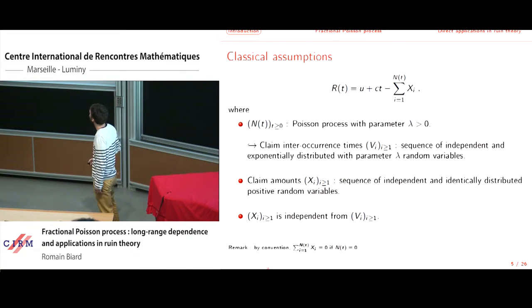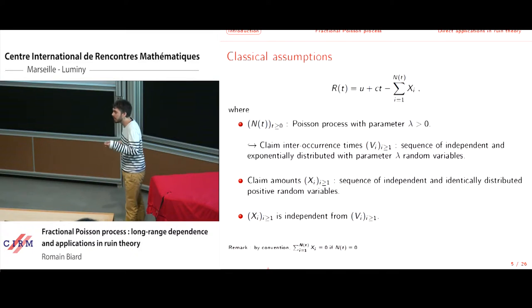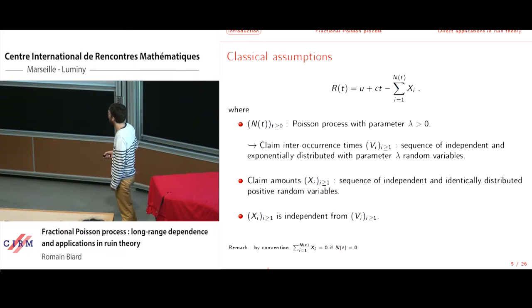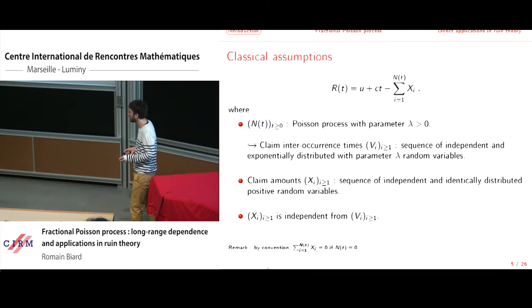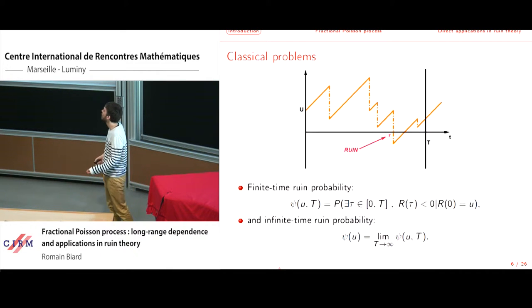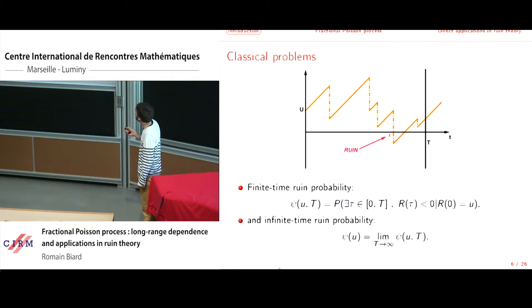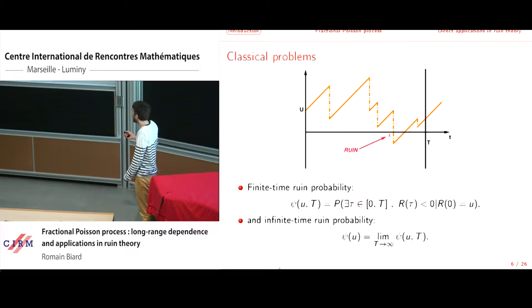Here are the classical assumptions of the model. Usually we assume that N(T) is a Poisson process with parameter lambda, so the times between claims are exponentially distributed with parameter lambda and these claims are independent. The claim amounts X_i are assumed to be a sequence of independent and identically distributed positive random variables, and we assume independence between the X_i and the V_i.